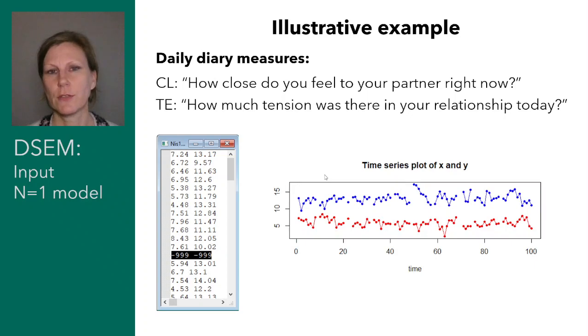I plotted these data using R, and what we see is that both variables fluctuate over time, more or less around a constant. We see there are some missing values, and these are indicated with the code minus 999 in the data file.